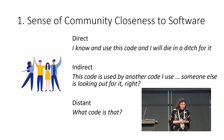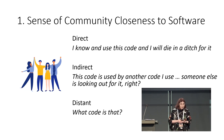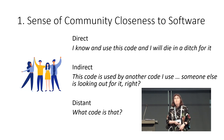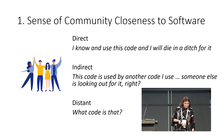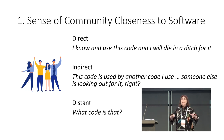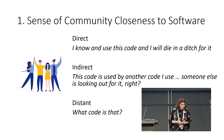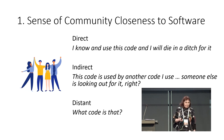Indirect closeness is where it's used by another code that I use, so somebody else is looking out for it. That's a kind of notion of 'somebody else's job,' which means it's nobody's job. And then distant — 'what code was that? Never heard of it' — and so that gets horribly neglected.